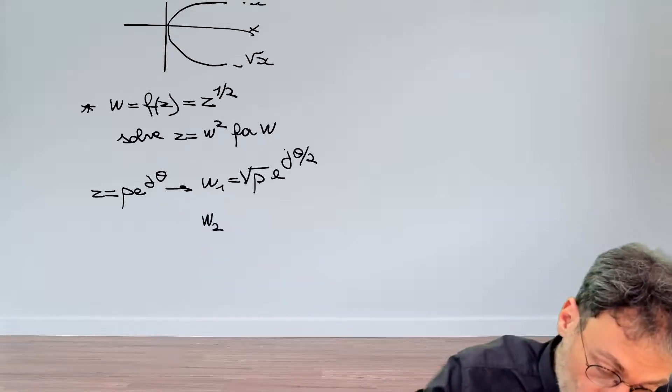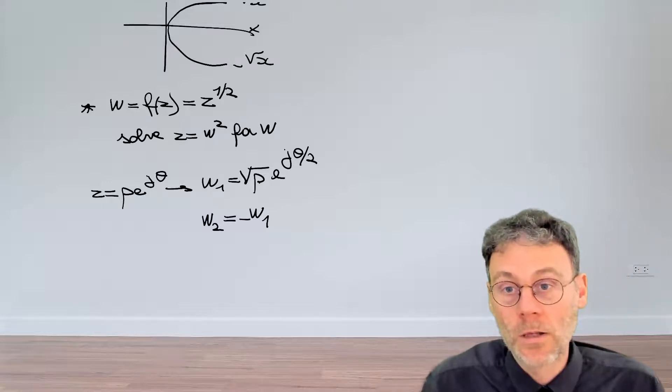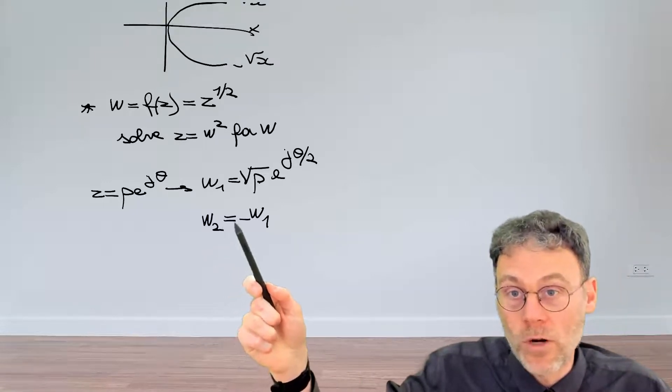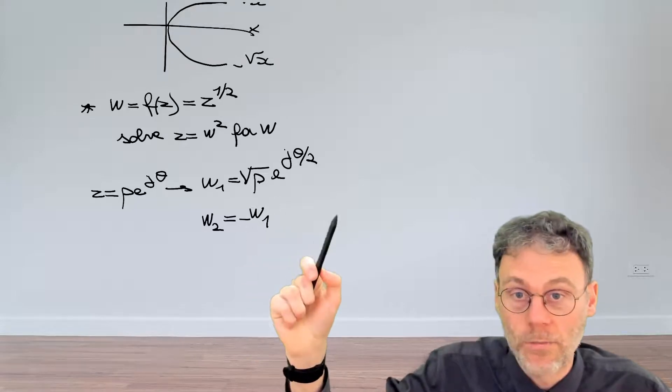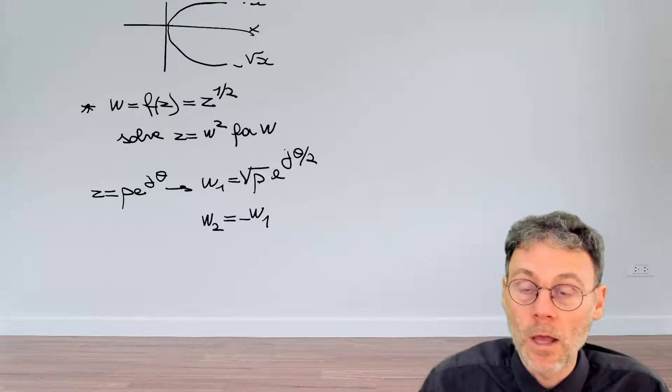Obviously, just like before, there's also a second solution, w₂, which is minus w₁. Because also here, if you square that minus sign, that will disappear in the squaring process, and you just end up back there.